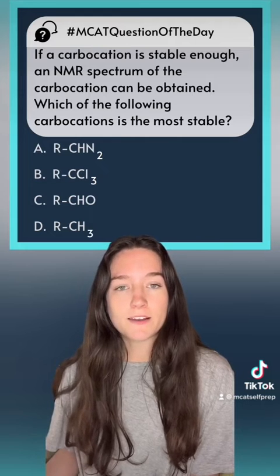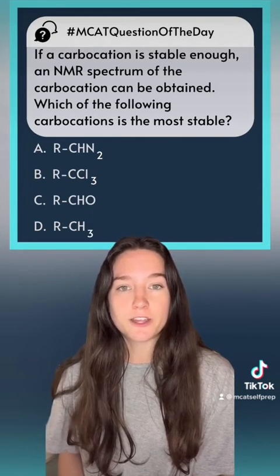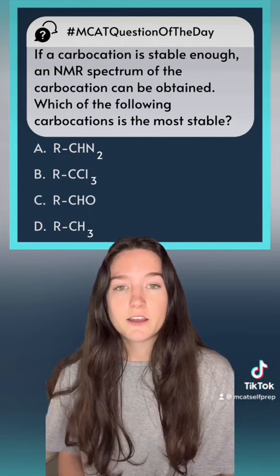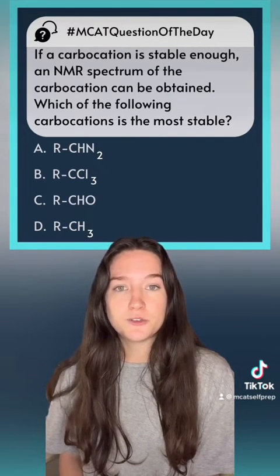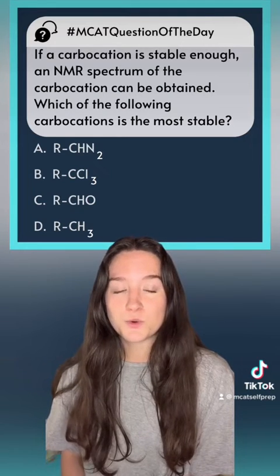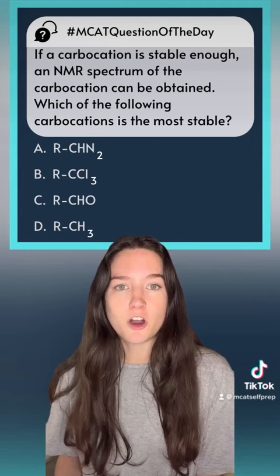All the carbocations are going to have a positive charge on that carbon. In order to stabilize that positive charge, attached to the molecule needs to be electron donating groups. So let's go through all the molecules and figure out which one would yield the most stable carbocation.